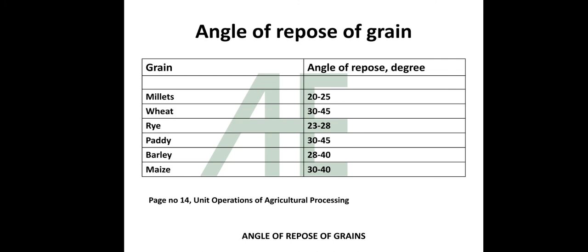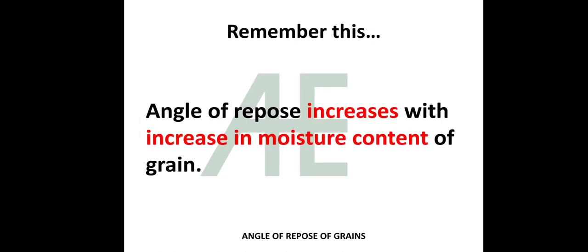Maize 30 to 40 degrees. For this angle of repose of grains, I referred page number 14 of the book Unit Operation of Agriculture Processing. Now remember this: as moisture content increases, angle of repose also increases.